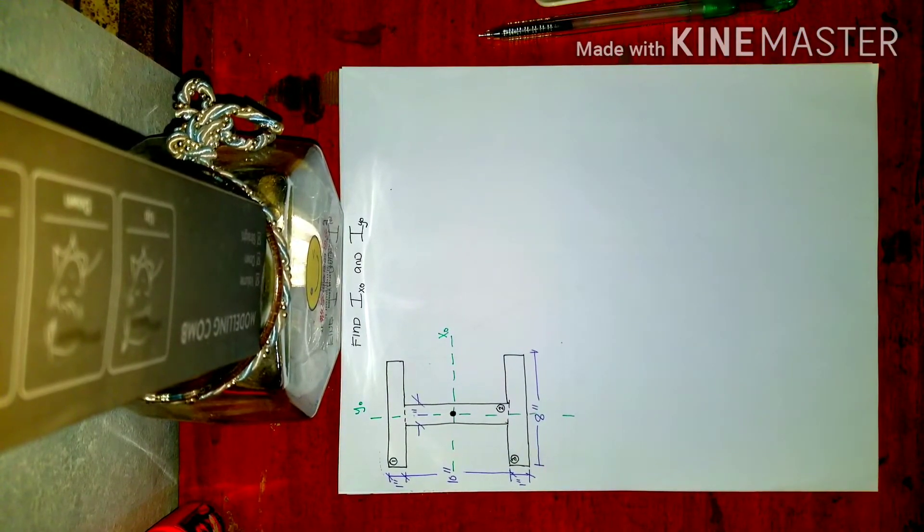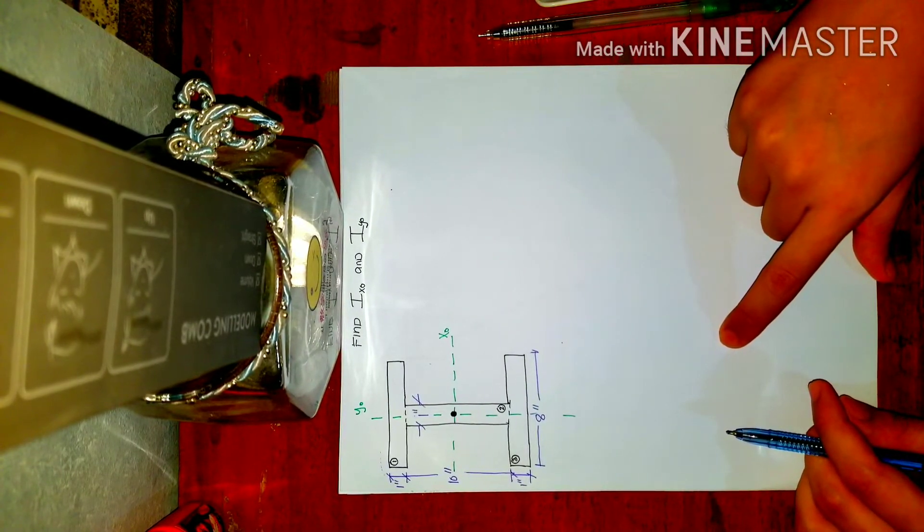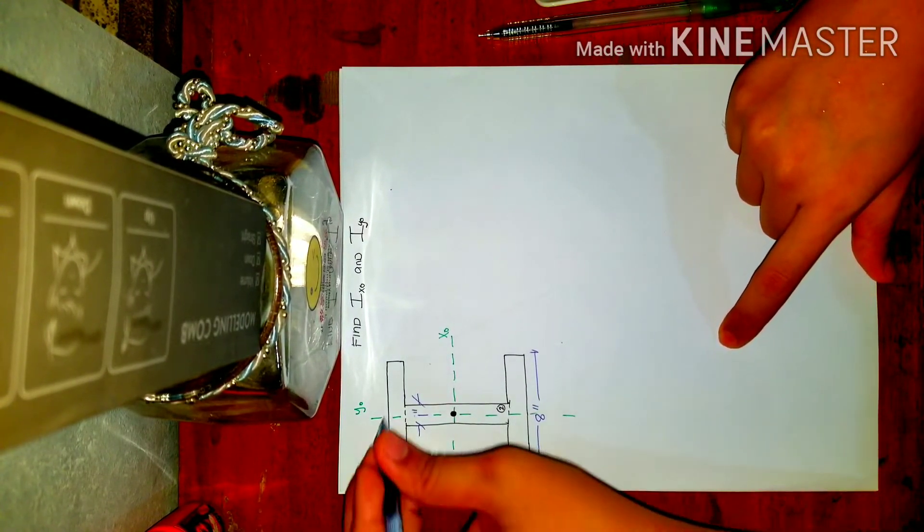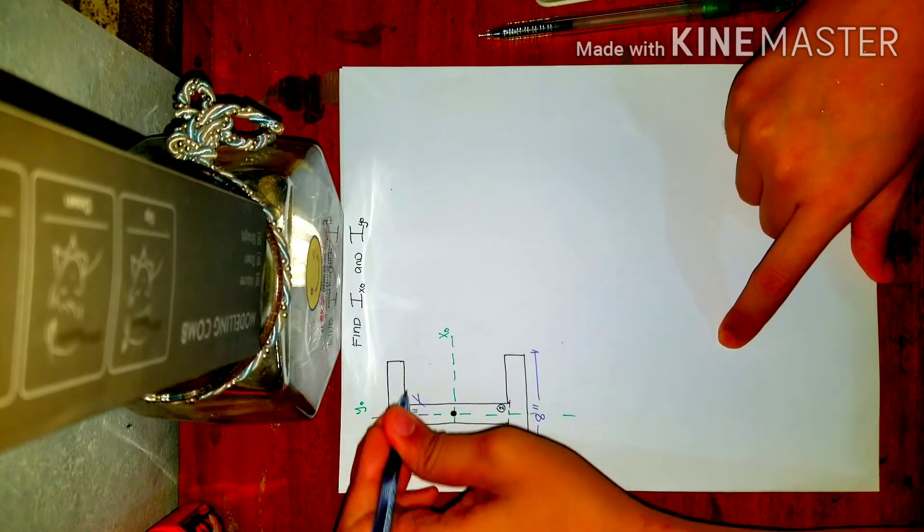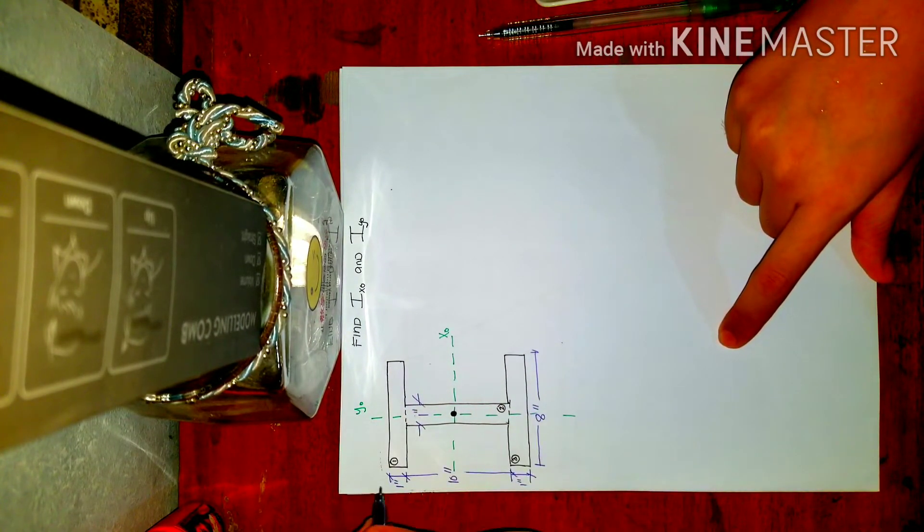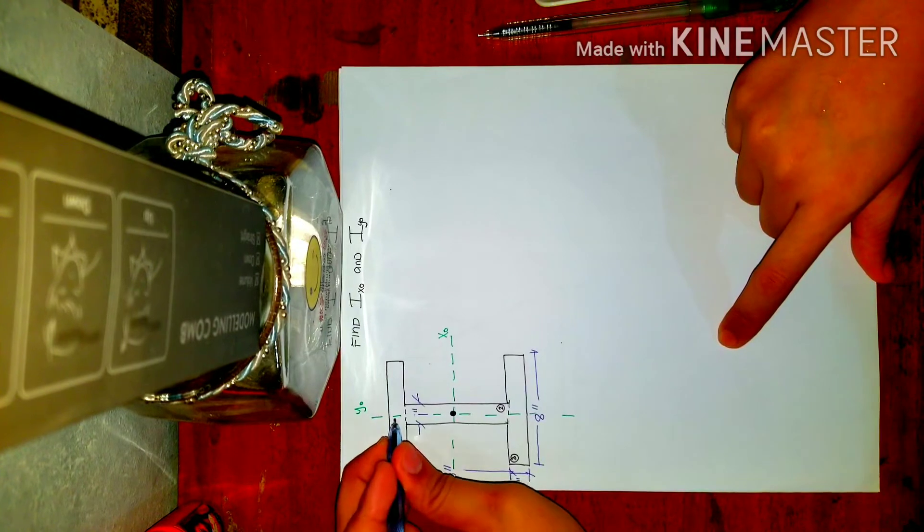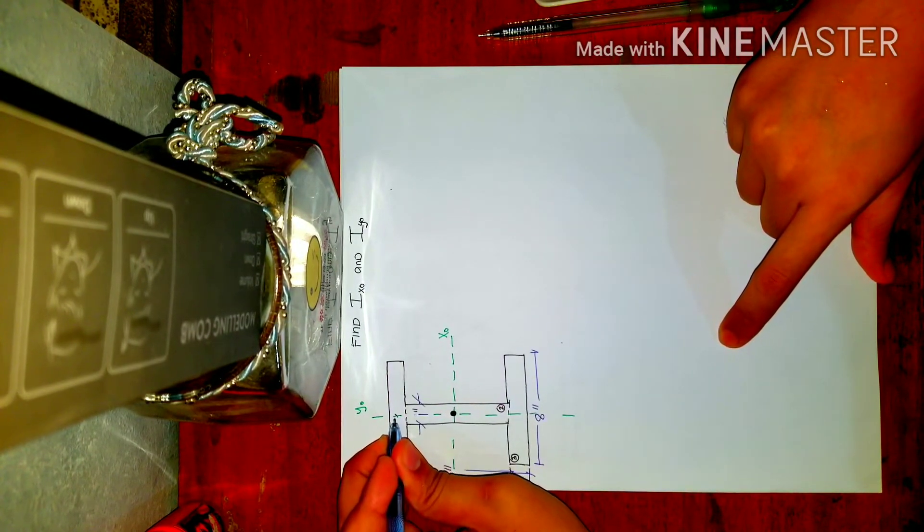Next, let's locate the centroid of each rectangle that we produced. So for the first one, this rectangle, the centroid is located where? Correct, here.